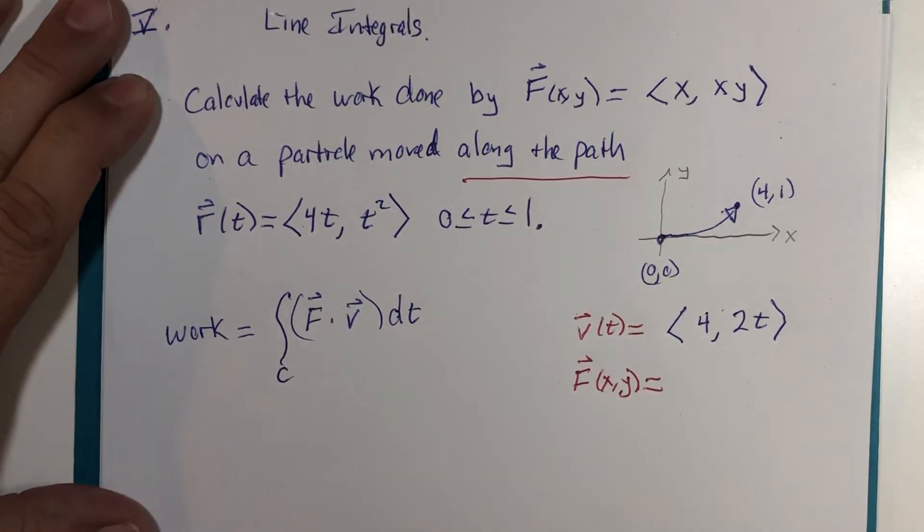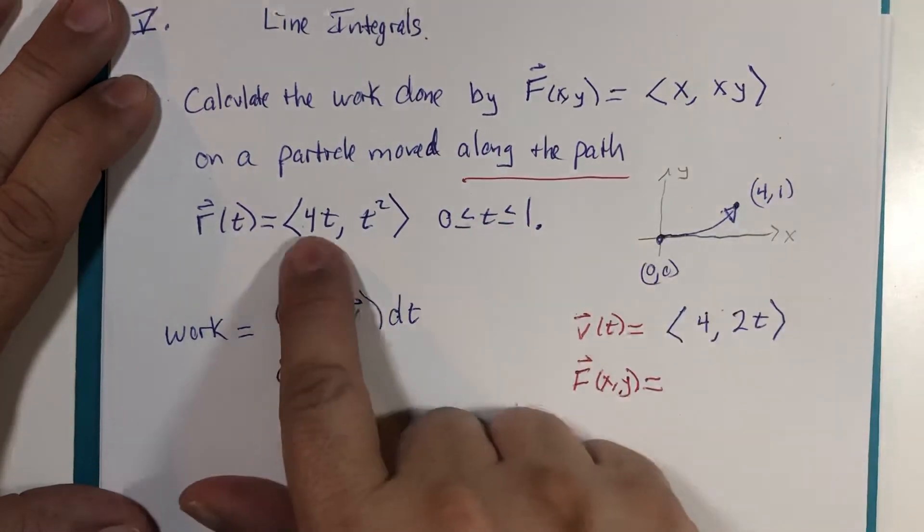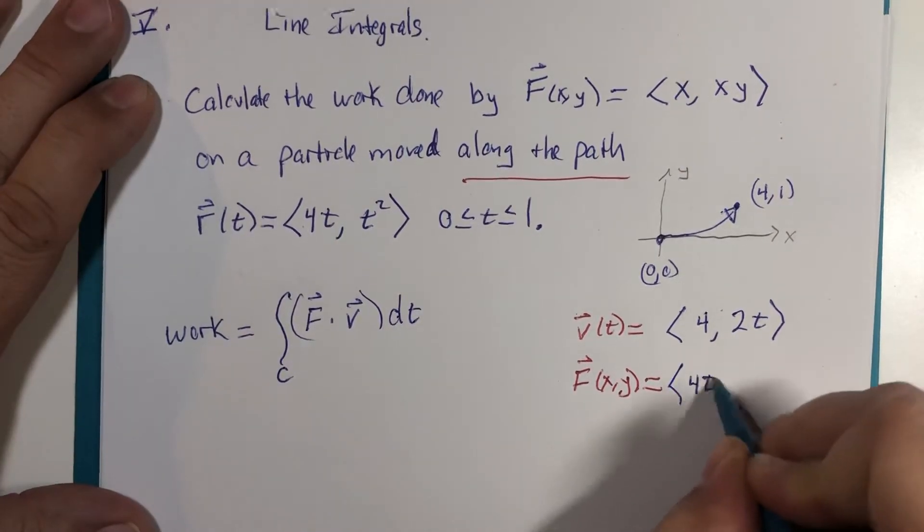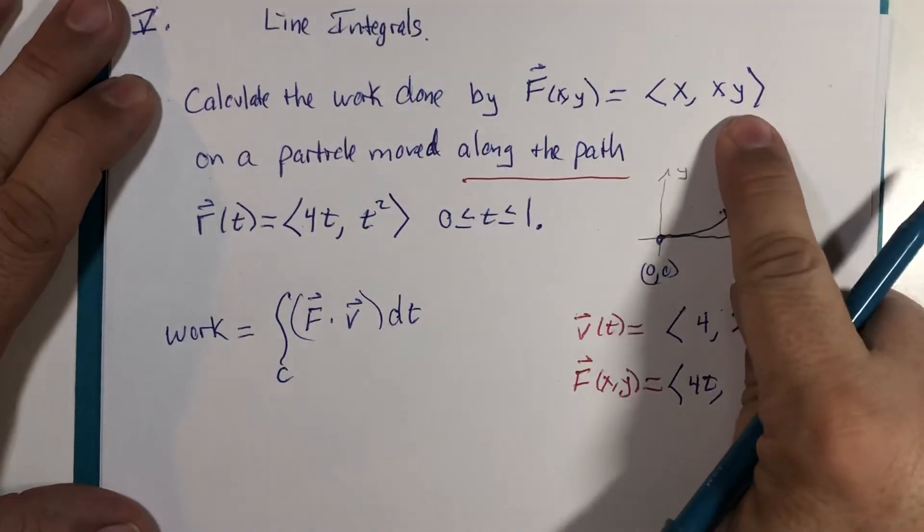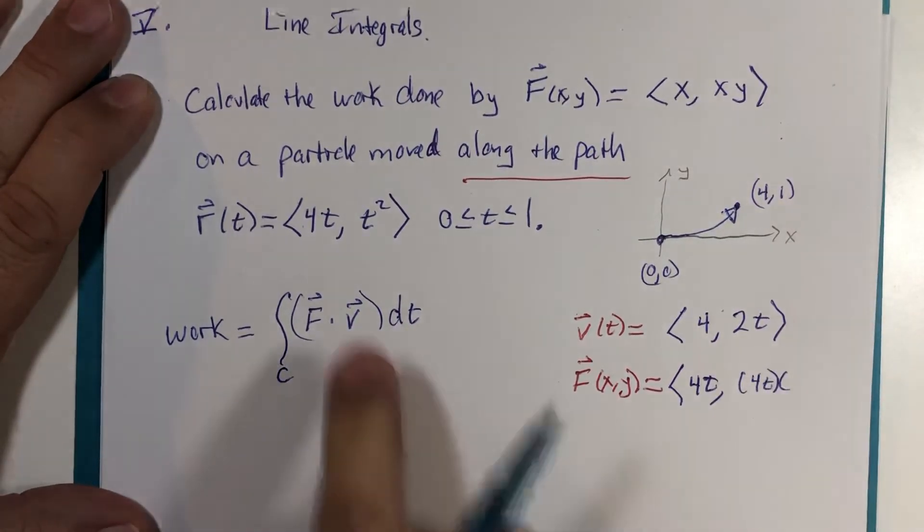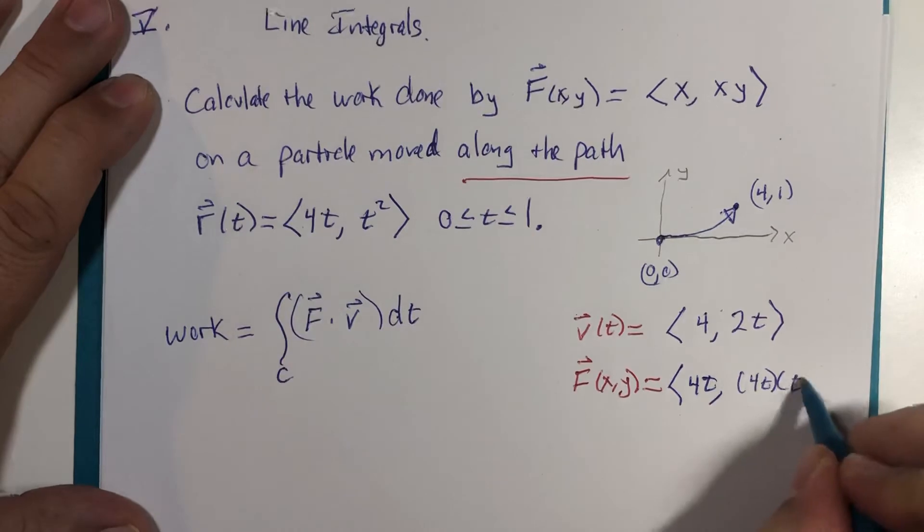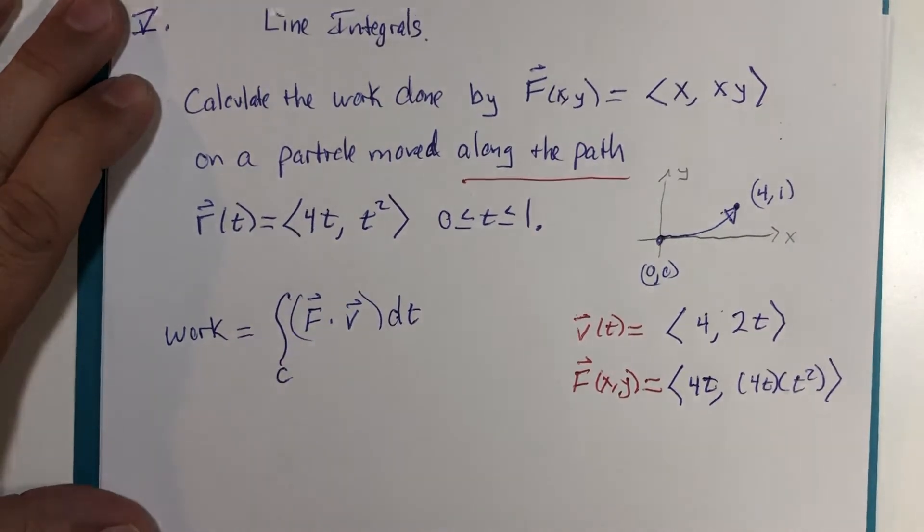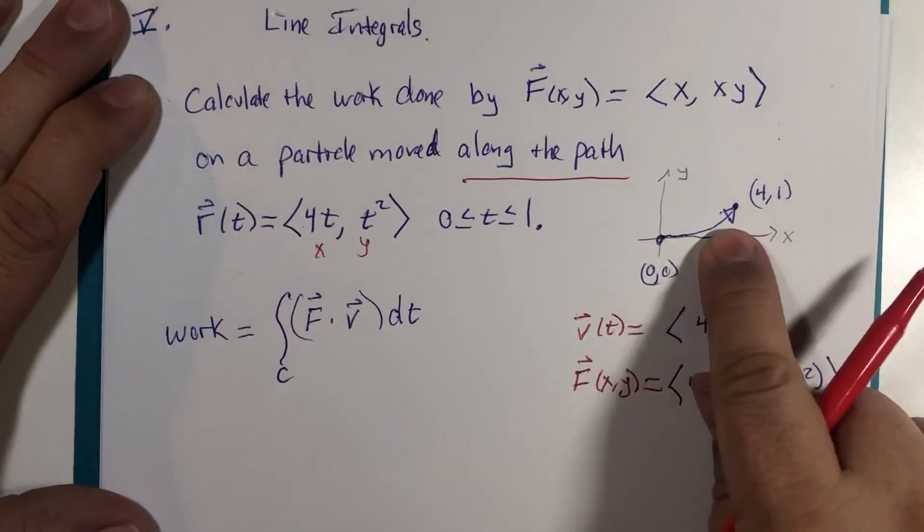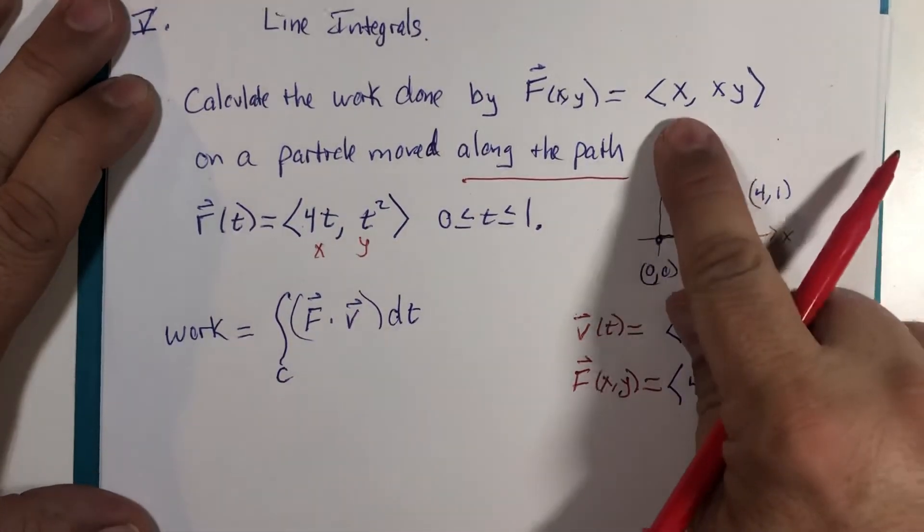So that means x is this x, it's simply 4t, and x times y is 4t multiplied by t² because this is the x and y values that determine the path, and we only care about the aspects of the vector field where it interacts with the path itself.